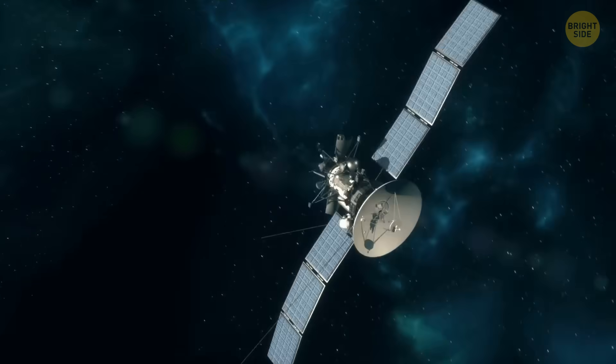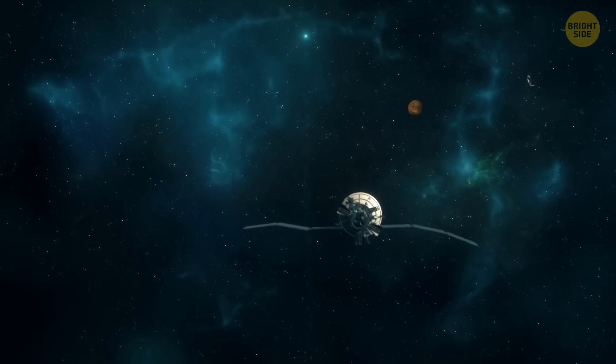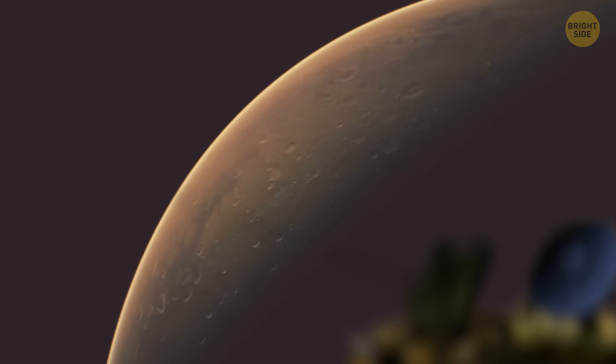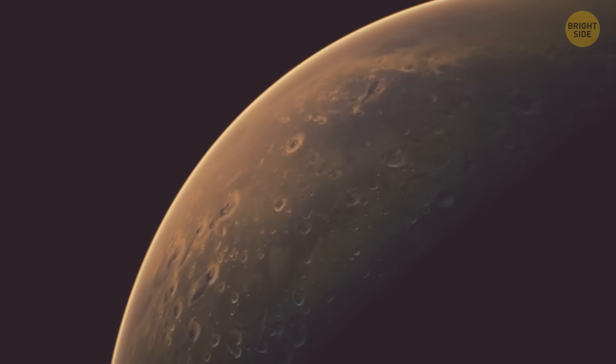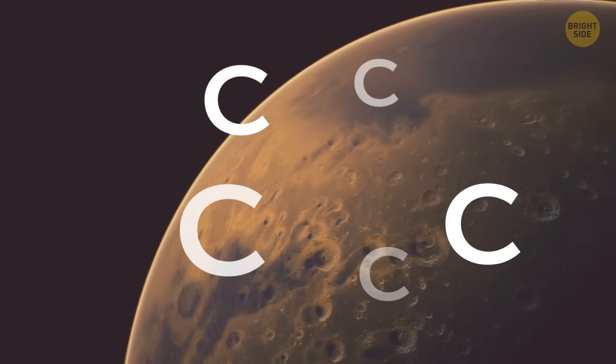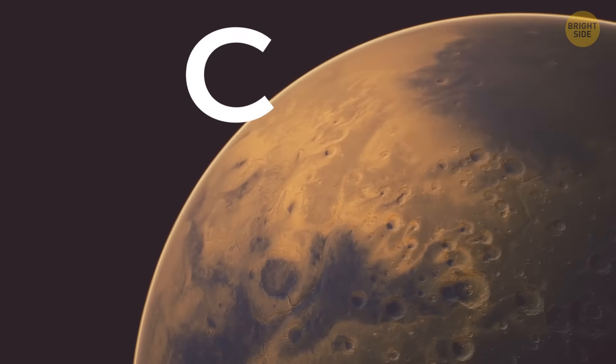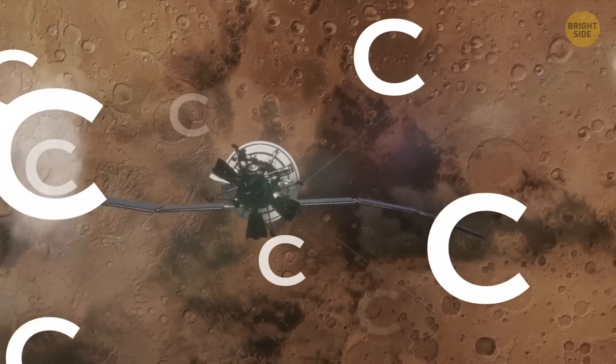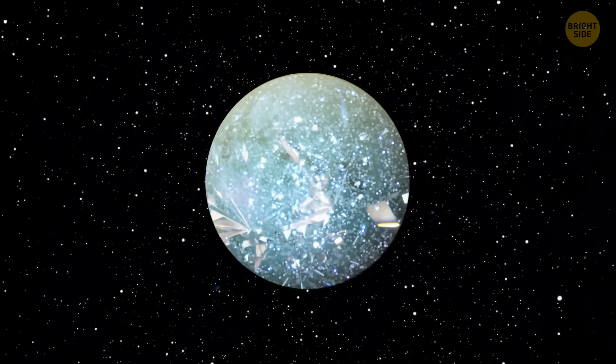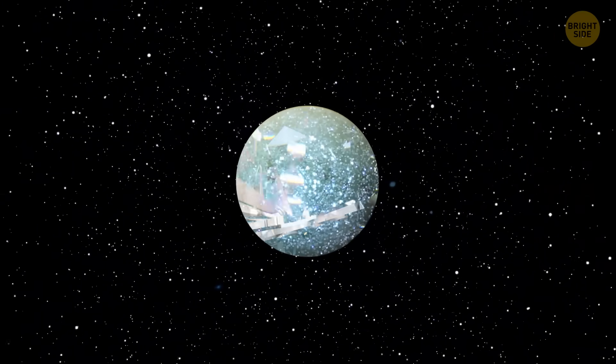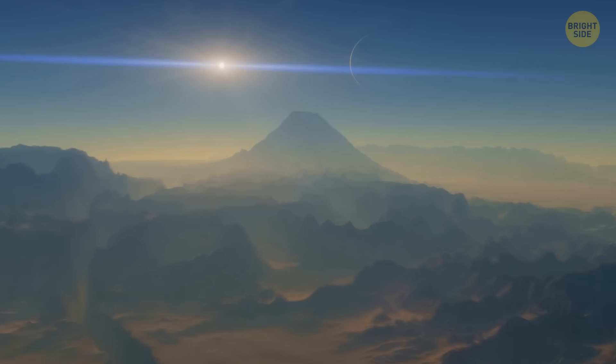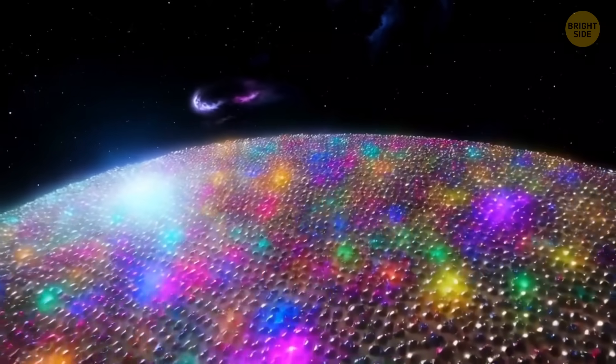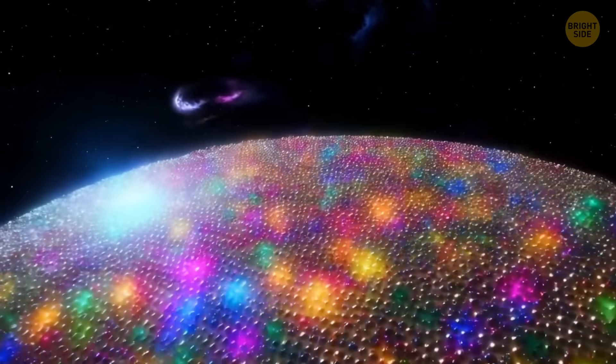Back in 2010, a study found out that the host star of 55 Cancri e had an unusually high carbon-to-oxygen ratio. If this ratio was also true for the planet, it would mean that 55 Cancri e might have huge quantities of carbon. And the coolest thing? It would be in the form of diamonds. It'd make this space body a literal diamond planet. Sadly, some follow-up studies discovered that the carbon-to-oxygen ratio on the planet was less extreme than originally thought. It makes the idea of a diamond-encrusted world less feasible.